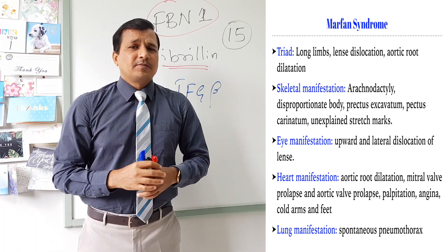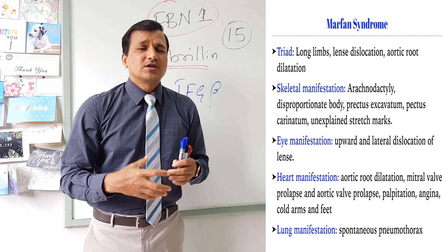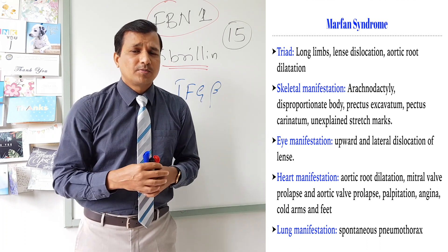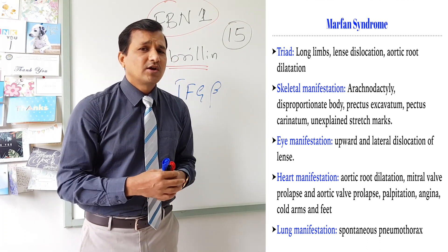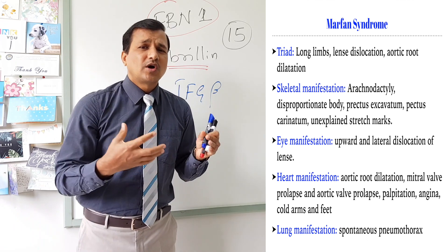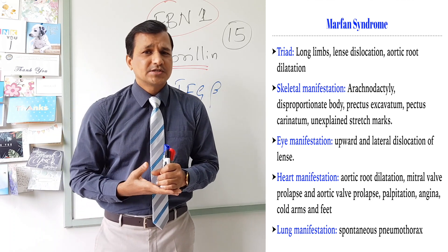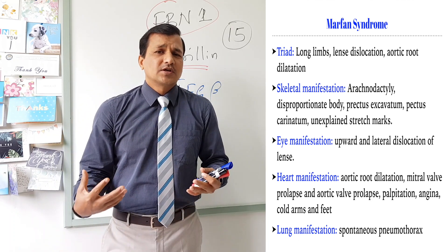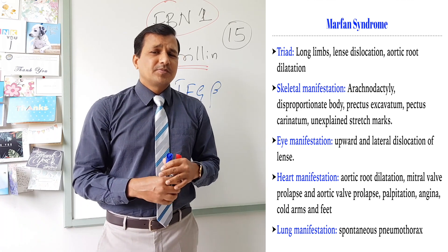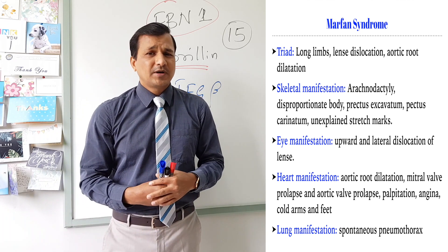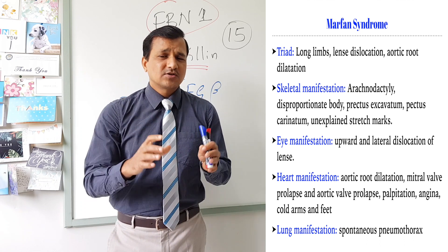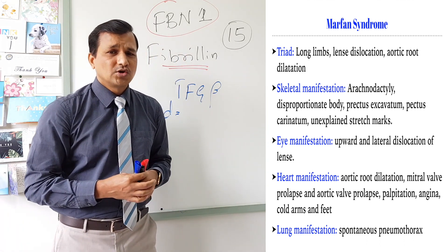Heart problems in Marfan syndrome include regurgitation due to mitral valve prolapse or aortic valve prolapse, giving rise to undue fatigue, palpitations, dyspnea, and cold extremities. Patients can also show lung manifestations, especially spontaneous pneumothorax, which is one of the common complications seen in Marfan syndrome.